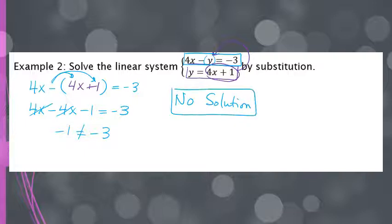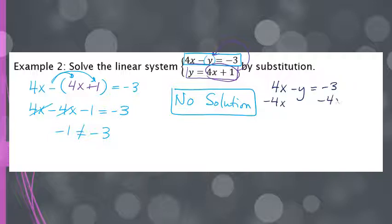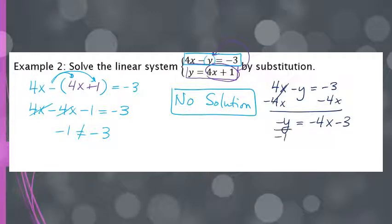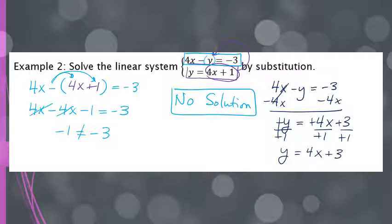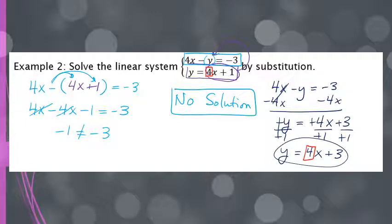If we put both equations into slope-intercept form, the bottom one is already there. Converting the top equation: subtract the x term to get negative y equals negative 4x minus 3, then divide by negative 1, giving y equals 4x plus 3. Looking at both equations, the slope is 4 in both cases, but the y-intercepts are different — 1 versus 3. So we have parallel lines, which means they never cross, which is why we got that equation that doesn't make sense.